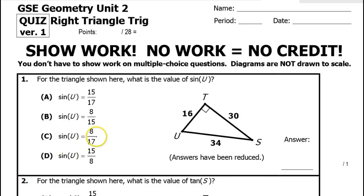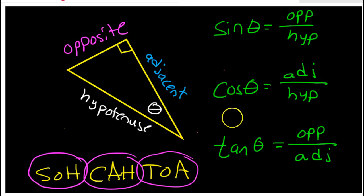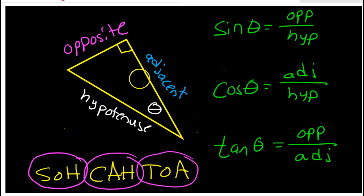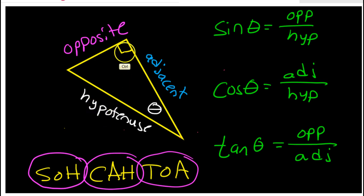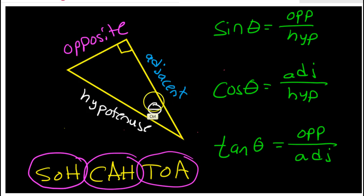In this video, I will show you how to solve a variety of problems using the trig functions sine, cosine, and tangent. It's important that you have these definitions memorized. They all depend on a right triangle. If you have a right triangle, the hypotenuse is always across from the right angle. These other two terms, opposite and adjacent, depend on the angle that you're talking about.